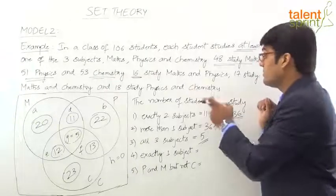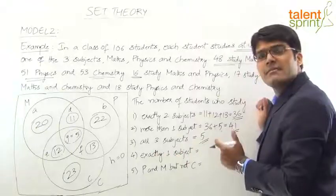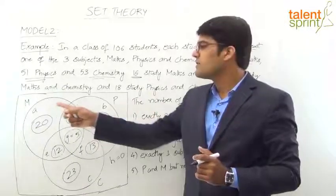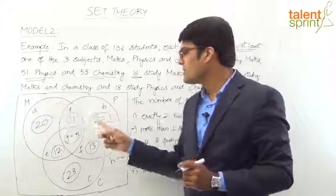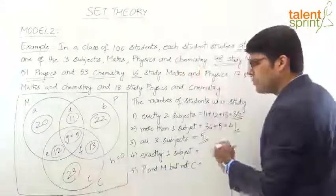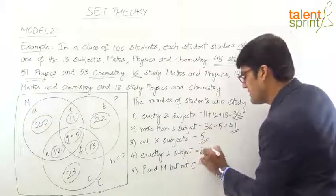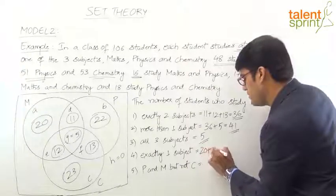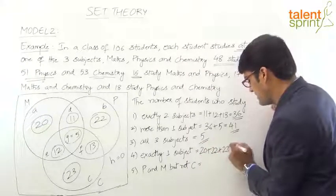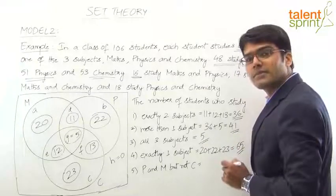Fourth question: the number of students who study exactly one subject. That is small a + small b + small c = 20 + 22 + 23 = 65.